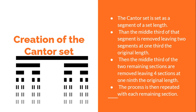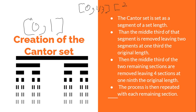The Cantor set is usually defined as the interval from zero to one, and then every middle third is removed. So it becomes zero to one-third and two-thirds to one. Then the process is repeated on each remaining segment, so on and so forth.